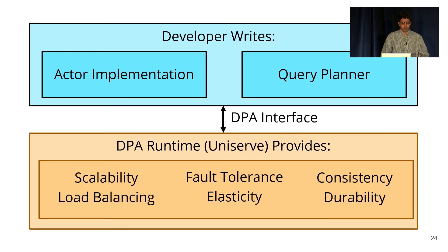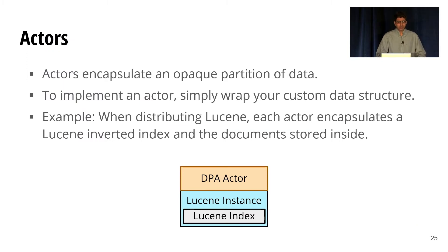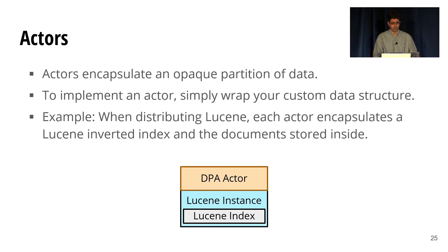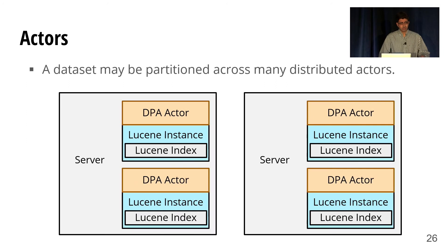To use DPA, a developer has to provide an actor implementation and a query planner mapping user queries to DPA parallel operators. An actor in DPA encapsulates an opaque partition of data — a developer wraps a custom data structure. For example, when we distributed Lucene, each actor encapsulated a Lucene inverted index and all the documents stored inside. We can manage large datasets by partitioning them across distributed actors, where a single server might host several actors each encapsulating a different Lucene index, and a large dataset can be partitioned across many of these on many servers.